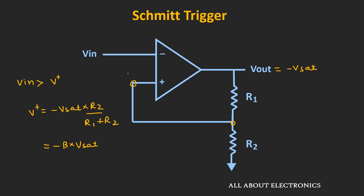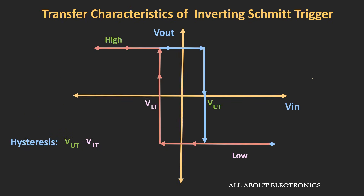The output will remain the same until the input voltage goes below −βVsat. Once that happens, the output will switch from the negative saturation voltage back to the positive saturation voltage. Looking at the transfer characteristic of the Schmitt trigger: the upper threshold voltage VUT equals βVsat, and the lower threshold voltage VLT equals −βVsat. Whenever the input goes above VUT, the output switches from positive to negative saturation; whenever the input goes below VLT, the output switches from negative to positive saturation. This is the basic working principle of the Schmitt trigger circuit.